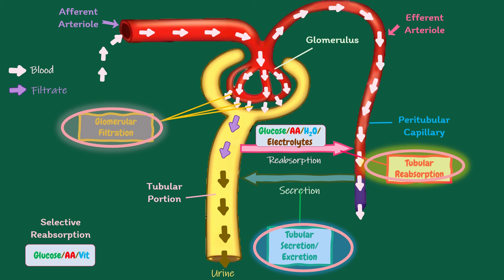Now, what is selective reabsorption? Tubular reabsorption is known as selective reabsorption, because the tubular cells reabsorb only the substances necessary for the body. Essential substances, such as glucose, amino acids, and vitamins, are completely reabsorbed from the renal tubule. Whereas the unwanted substances, like metabolic waste products, are not reabsorbed and are excreted through urine.